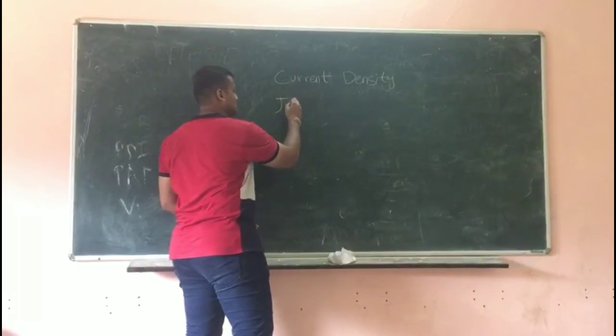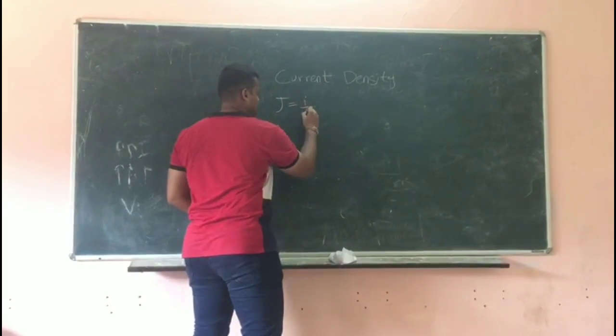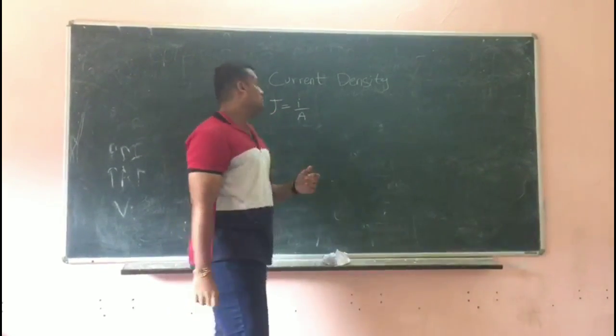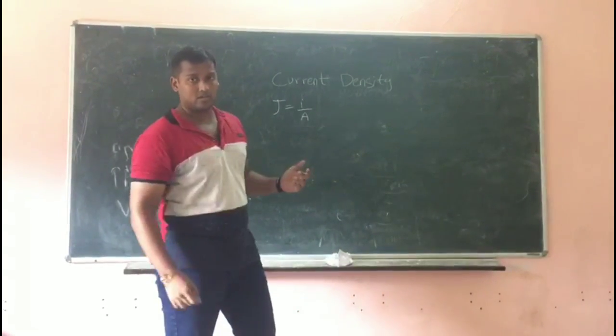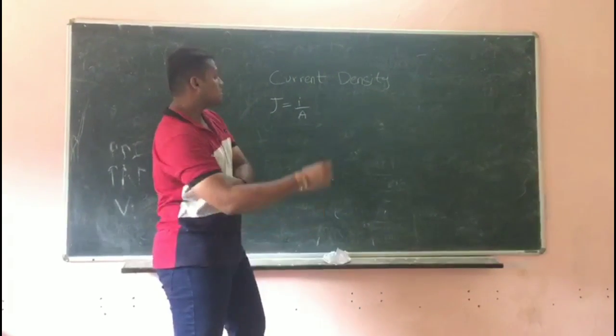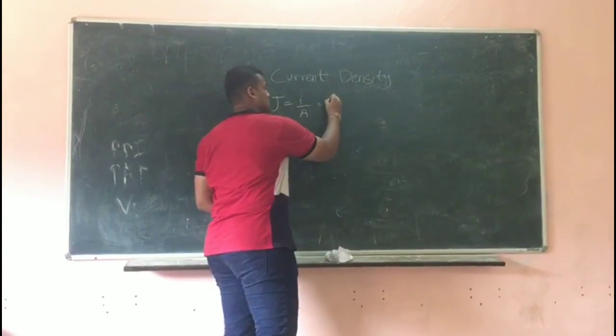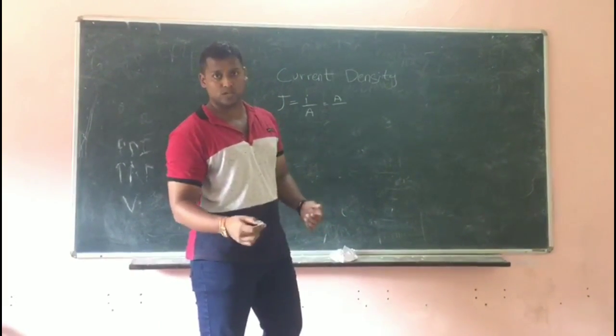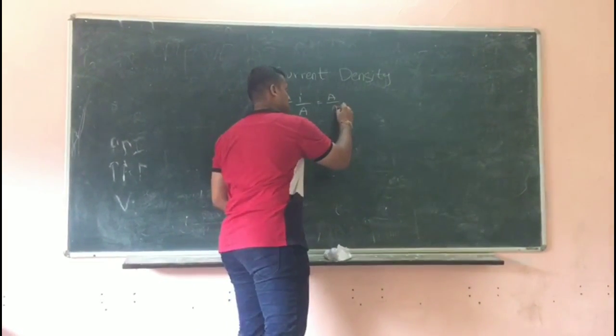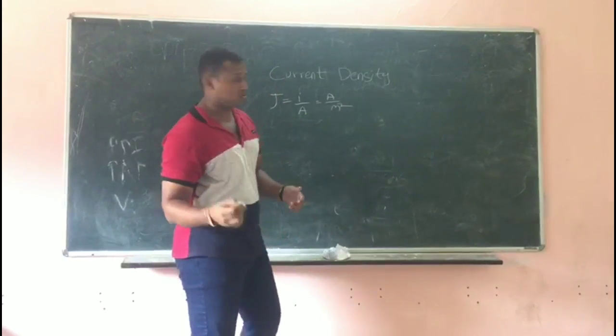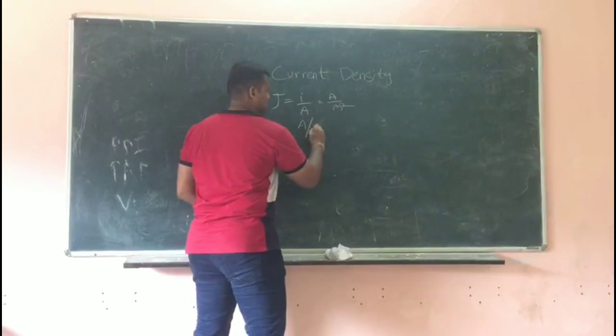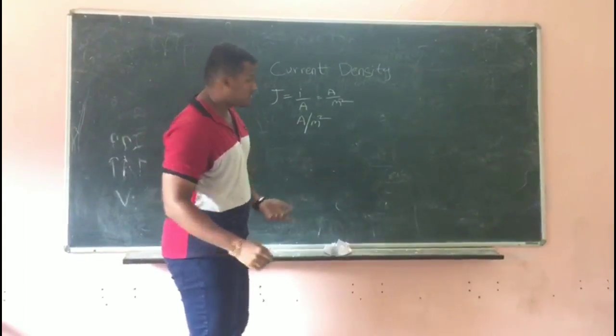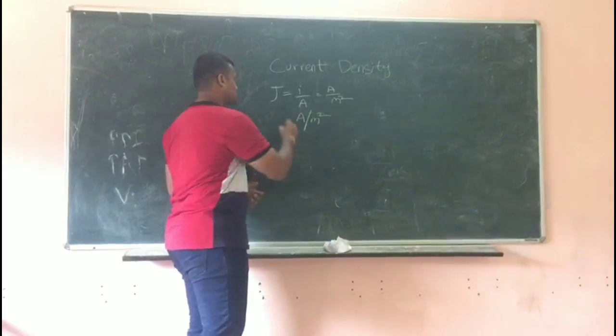The formula for j is equal to i by A. So how can we get the unit? The unit for current is amperes, and cross sectional area is meters square. So we can write the unit as amperes per meters square. This is the unit for current density.